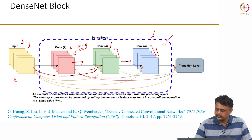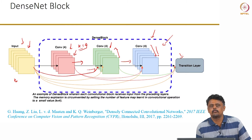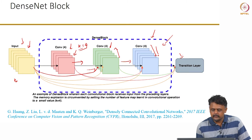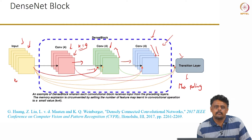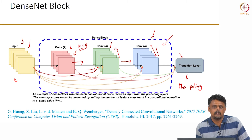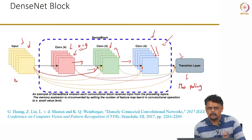The output from a dense block is given to what is called a transition layer, which uses a bottleneck concept like we saw with ResNet and Inception — a 1×1 convolution followed by max pooling to reduce the size of the feature maps. The transition layer allows for max pooling, which leads to reduction in feature map size. Without this dense block structure, max pooling would not have been possible because the feature map sizes across layers would differ, making concatenation difficult.